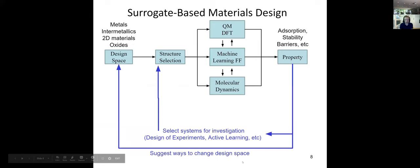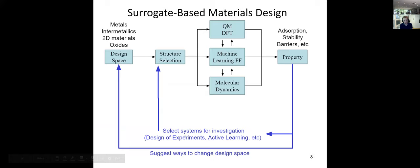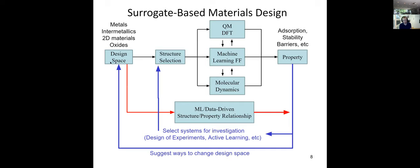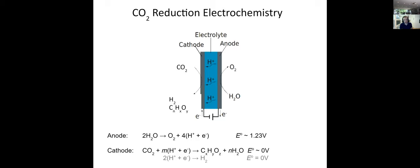That's the first place machine learning comes in. The next place is: how do we choose the calculations we want to do? As engineers, we want to look at these properties and ask what is the next set of calculations we should run — you can call it design of experiments or active learning. We also want to get insights into what other materials we should be considering. The second place ML comes in is building a surrogate model that directly predicts properties from structure, based on calculations done in the past.